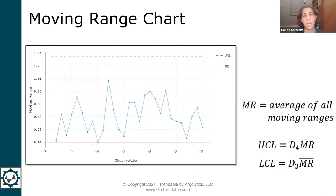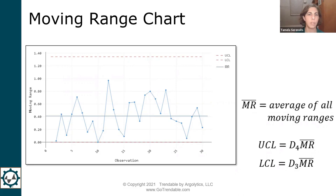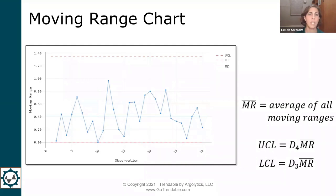Just like the individuals chart, the center line on the moving range chart is at the average of all those moving ranges. The control limits here are calculated using the average of all moving ranges multiplied by unbiasing constants D3 and D4. These values come from a table because the average moving range standard deviation is considered a biased estimator. We use those unbiasing constants to determine where the control limits are for the moving range chart.